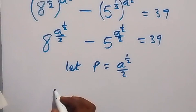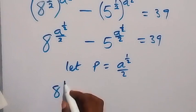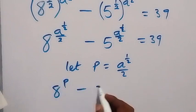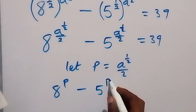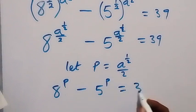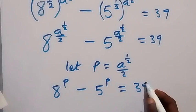Let the letter p be equal to a raised to power half, over 2. From here, we can easily write this as: 8 raised to power p, minus 5 raised to power p, equals 39.